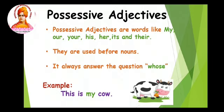Possessive adjectives are words like my, your, his, her, its, and their. They are used before the nouns. This possessive adjective will always come before the noun. It always answers the question 'whose.' For example, whose cow is this? This is my cow. So here 'my' is the possessive adjective.